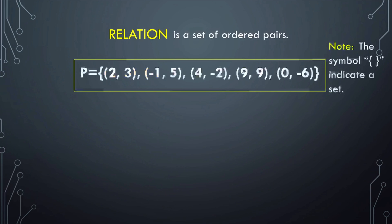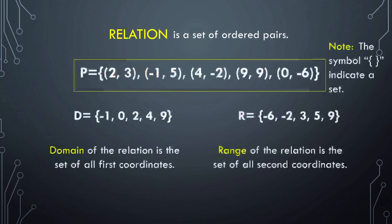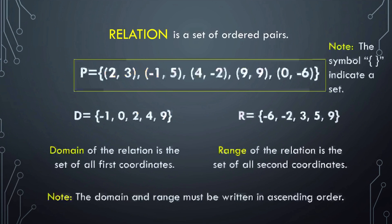In the given example, the set of all first coordinates — negative 1, 0, 2, 4, and 9 — is the domain of the relation. While the set of all second coordinates — negative 6, negative 2, 3, 5, and 9 — is the range of the relation. Remember that the domain and range must be written in ascending order.